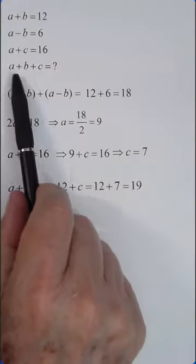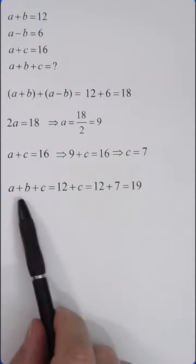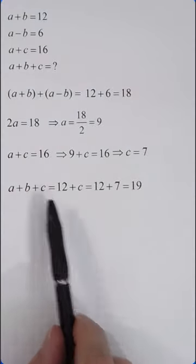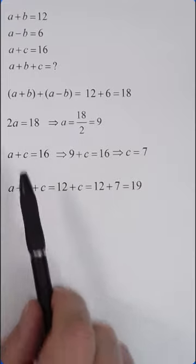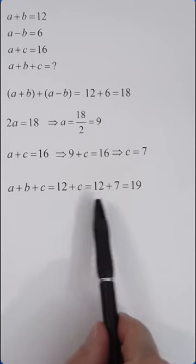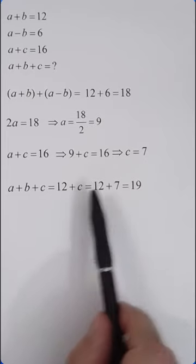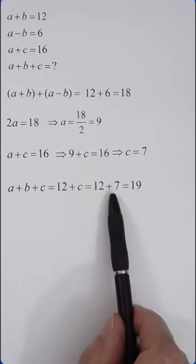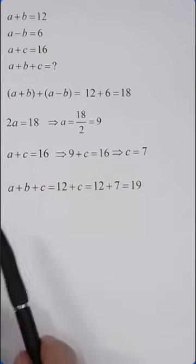The original question was, what is a plus b plus c? a plus b, we know that is 12. So 12 plus c equals 12 plus 7, which is 19. That's the answer.